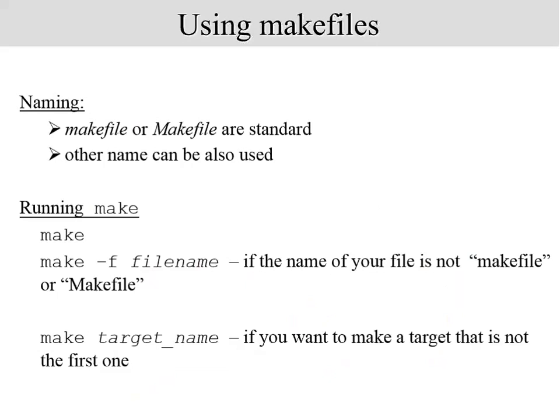The make file is named 'makefile' or 'Makefile' — those are the standard names, though you can use other file names as well. To run make, the command is simply 'make'. You can say 'make -f filename' if the file is not named 'makefile', and you can also specify a target: 'make target_name' to build only that particular target.